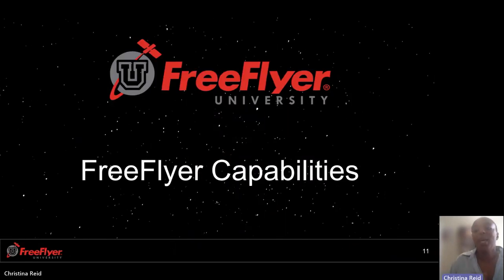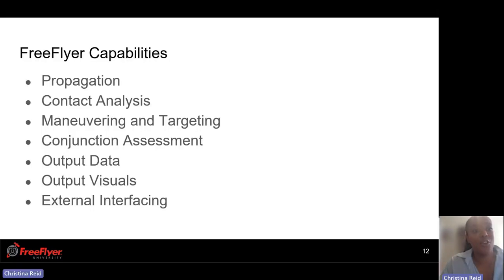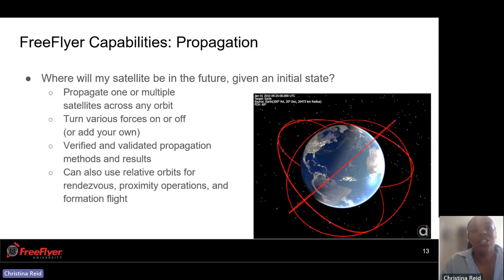Getting more into FreeFlyer capabilities, here is an overview where we have propagation, contact analysis, maneuvering and targeting, conjunction assessment, output data, output visuals, and external interfacing. The first capability we can focus on is propagation — that's: where will my satellite be in the future given an initial state? We're able to propagate one or multiple satellites across any orbit.